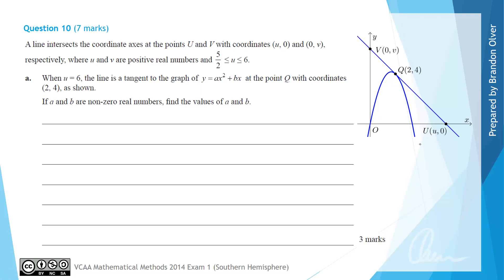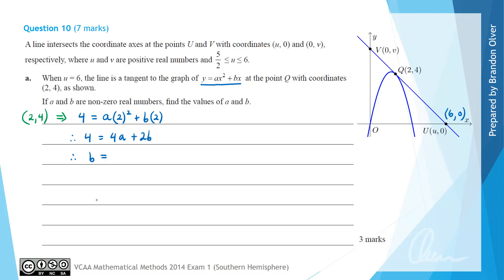Since U equals 6, we know the coordinate is (6, 0). With two unknowns a and b, we need two pieces of information. The first is that the point (2, 4) lies on the parabola. Substituting into y = ax² + bx gives 4 = a(2²) + b(2), so 4 = 4a + 2b. Solving for b gives b = 2 − 2a, which we call equation 1.